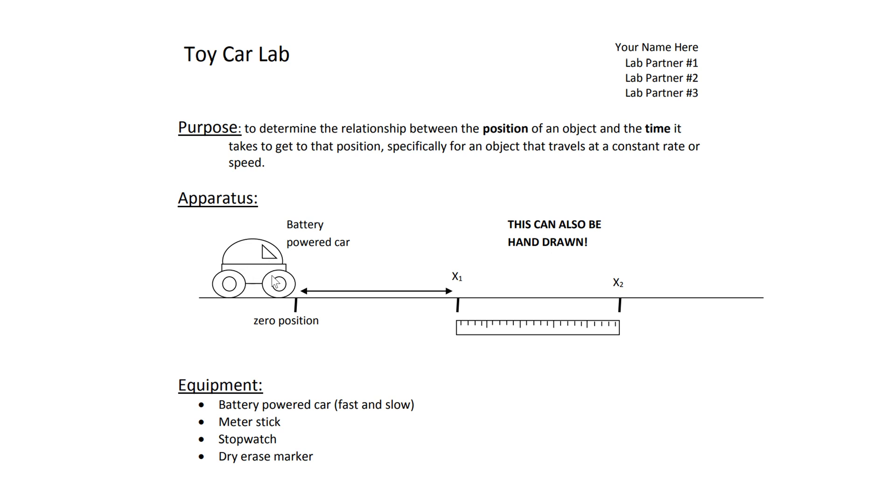So the toy cars, they were the red and blue cars that you were marking the positions on the ground with. We always start with a purpose statement. Okay, and the purpose tells us the two variables that eventually are going to be in the LoggerPro graph that we have and the equation that we write from that graph. So in this case it was to determine the relationship between the position of an object and the time it takes to get to that position, specifically for an object that travels at a constant rate or speed. So that's the toy cars.